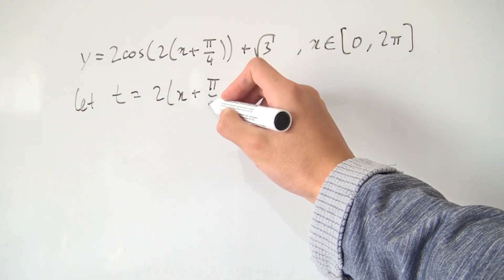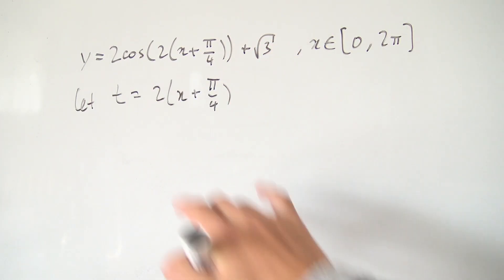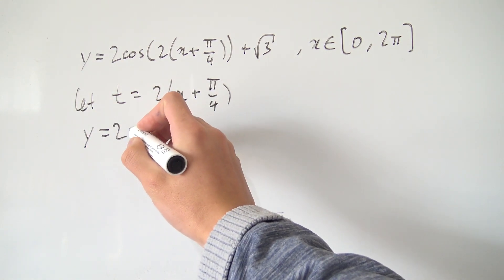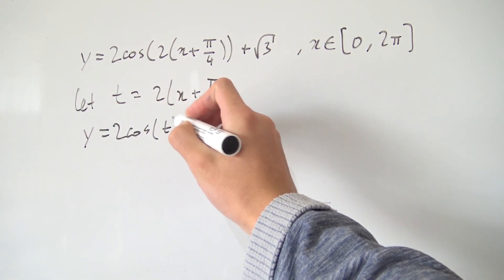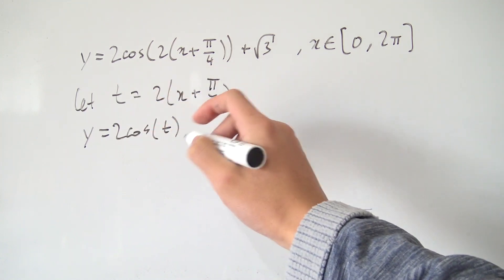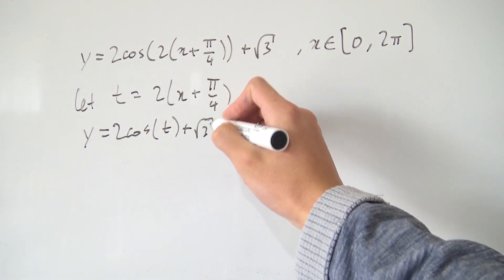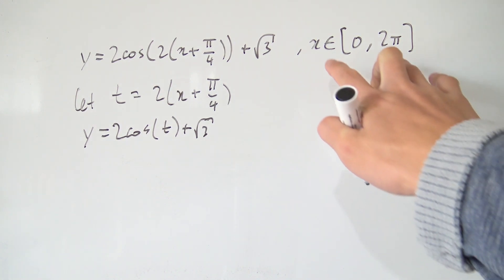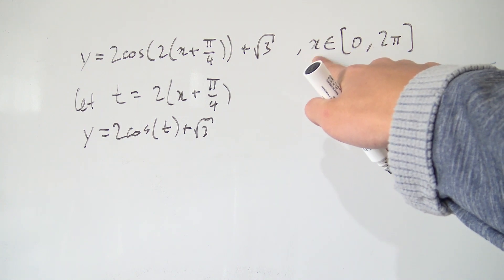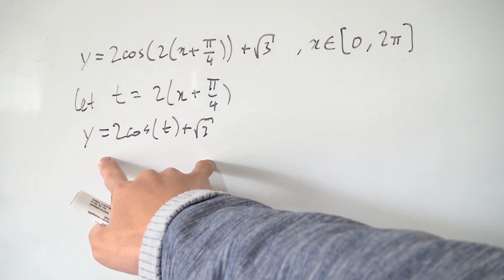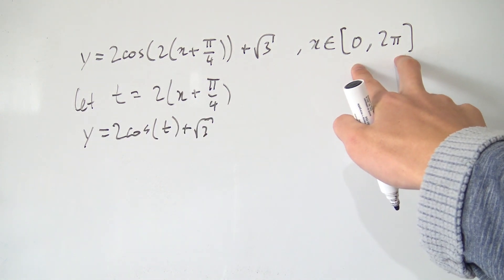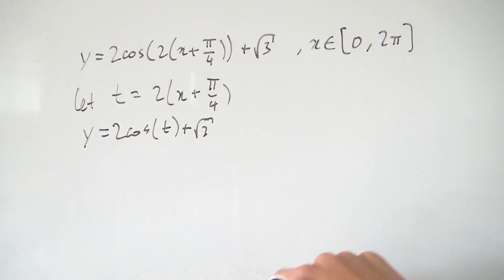We don't like all of this junk inside the cosine. So let's pick a new angle — let's call it t — and let t equal all of the junk inside: that's 2 times x plus π/4. If we substitute this in, we get y equals 2 cosine of t plus root 3, replacing all that junk with t. Now we have a much more manageable equation. We're also given a domain in terms of x, but in our new equation we're dealing with t's, so we have to change our domain to match.